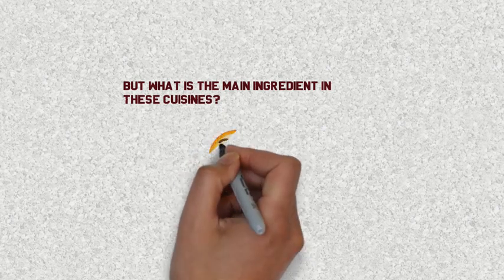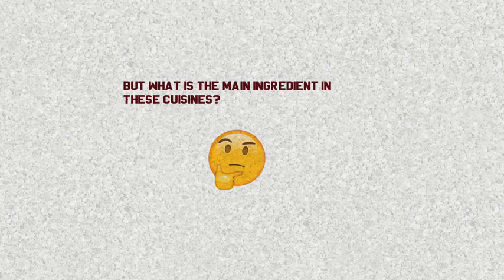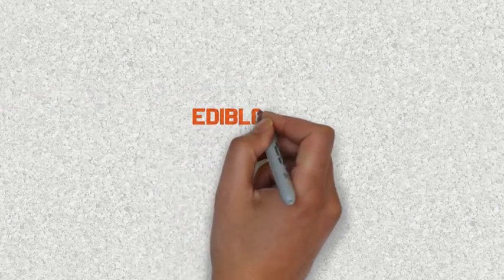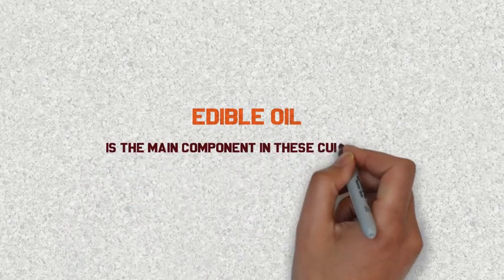But what is the main ingredient in these cuisines? Edible oil is the main component in these cuisines.